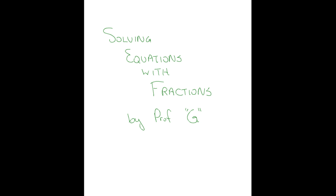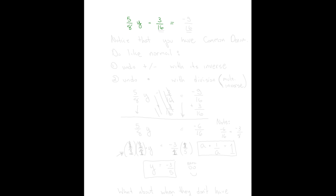The first example we're going to use is five-eighths y minus three-sixteenths equals negative nine-sixteenths. Notice that you have common denominators here, which makes the problem a little easier because you don't have to worry about finding a least common denominator — it already has one. So you can just do this one like normal.